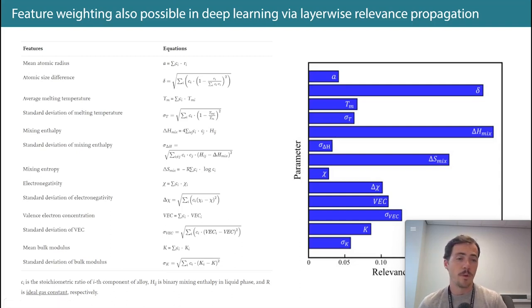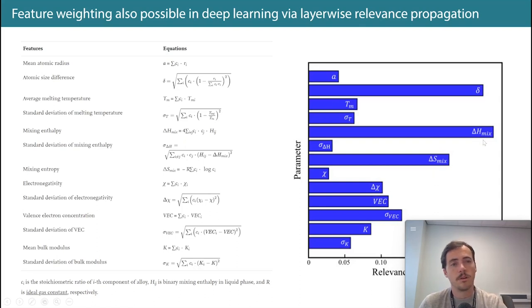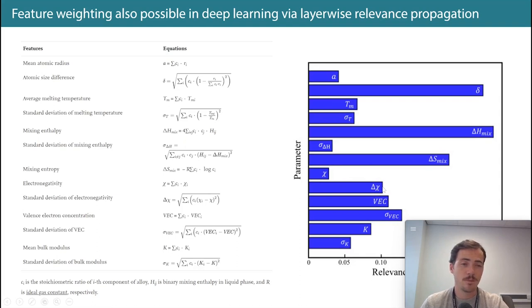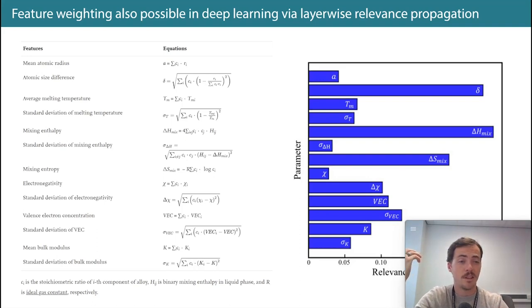They used layer-wise relevance propagation to get feature weighting out of the 13 features. They found ΔH_mix was the most important, followed by size, while ΔS_mix was not the most important. This differs from earlier papers that said electronegativity difference was quite important. Does it depend on the task? Does it depend on the data? Absolutely — and since these aren't done on the exact same dataset, it's hard to say generally which features are most important for HEAs.